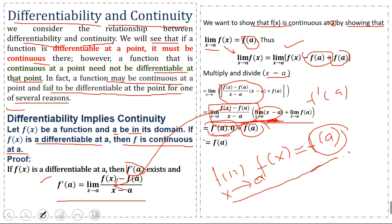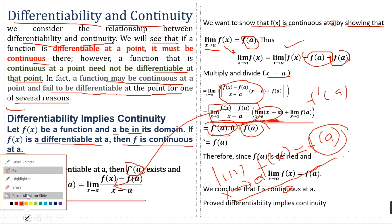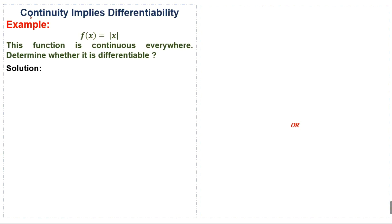Since f(a) is defined and the limit of the function as x approaches a equals the value of the function at a, we conclude that f is continuous at a. Proved: differentiability implies continuity.